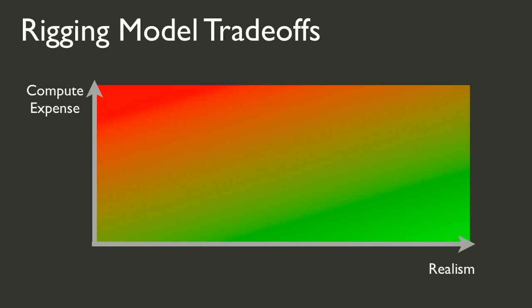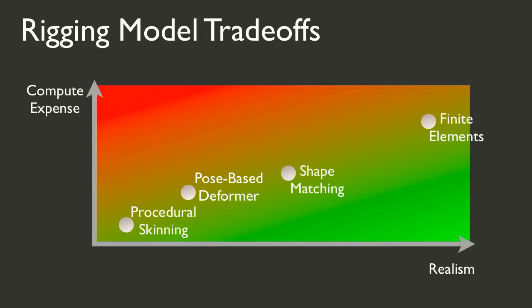Different rigging models have different trade-offs. Traditional methods are computationally cheap. Finite element models are more accurate but more expensive. Shape matching methods try to balance this trade-off.